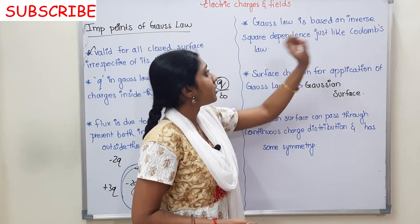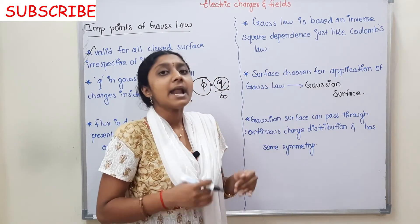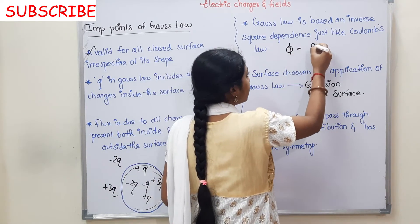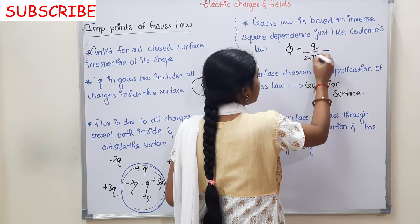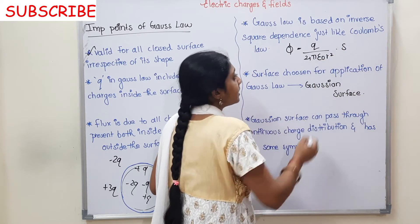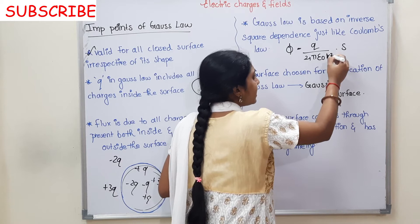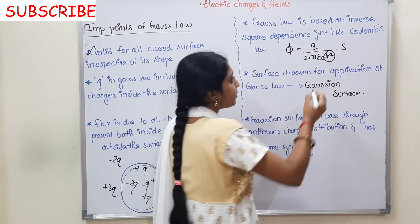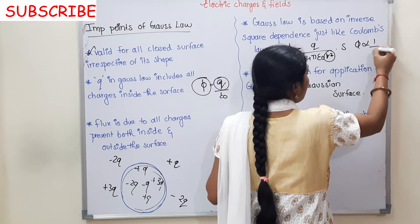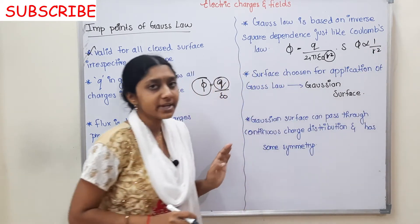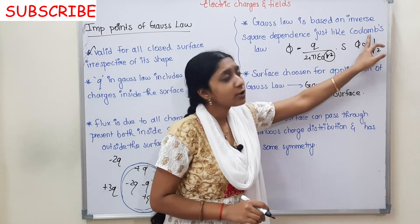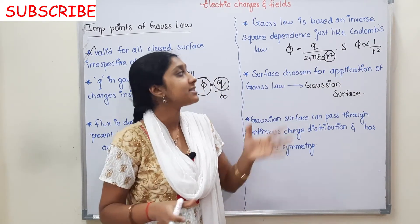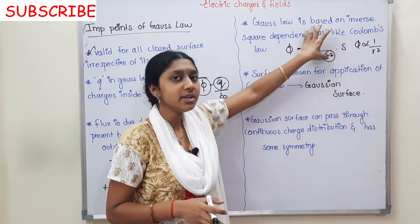Gauss's Law is based on inverse square dependence, like Coulomb's Law. To derive Gauss's Law, there is a 1 by R square relation, so flux is directly proportional to 1 by R square — that is inverse square dependence. This connection comes from Coulomb's Law.